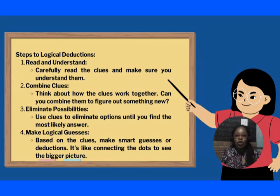So what are the steps to logical deductions? One, read and understand. Make sure that you carefully read the clues and make sure you understand them. Two, you're going to combine the clues. Think about how the clues work together. Can you combine them to figure out something new? Three, you're going to eliminate possibilities. And this is important. Remember, you're doing a multiple choice test, right? So once you have put your clues together, you can eliminate some possibilities. Use the clues to eliminate options until you find the most likely answer. And fourth, you're going to make a logical guess. So based on the clues, make smart guesses or deductions. It's like connecting the dots to see the bigger picture.